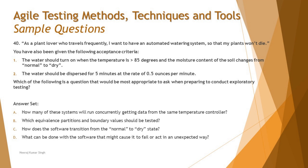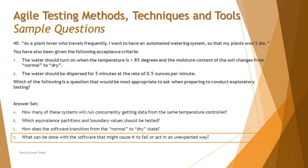Option A — how many systems run concurrently — is more about preparing the environment and test data setup. Option D — what can be done with the software to cause it to fail or act unexpectedly — is more appropriate for exploratory testing because we are focused on identifying defects and failure scenarios. The question asks for what is most appropriate, and from a functionality standpoint, understanding failure scenarios takes priority. The answer is D.